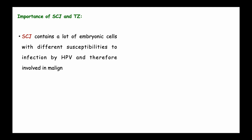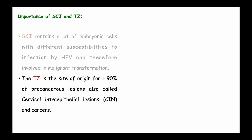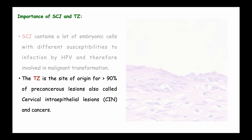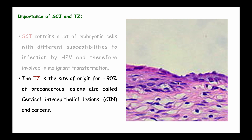The squamous columnar junction contains many embryonic cells with different susceptibilities to infection by human papillomavirus and is therefore involved in malignant transformation. The transitional zone is the site of origin for more than 90 percent of precancerous lesions — also called cervical intraepithelial lesions — and some cancers. The diagram shows the upper layer of the stratified squamous epithelium and the inner layer of the columnar epithelium.